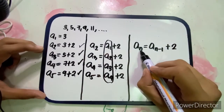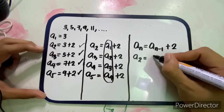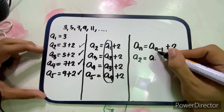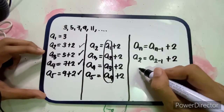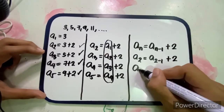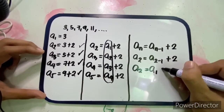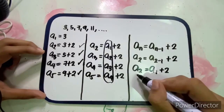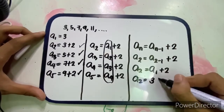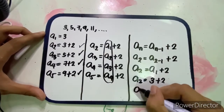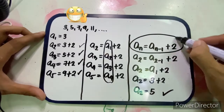To verify: if we let n equal 2, then a sub 2 equals a sub (2 minus 1) plus 2, which simplifies to a sub 1 plus 2. Since a sub 1 is 3, we get 3 plus 2, which equals 5. This confirms our recursive formula is correct.